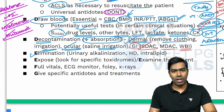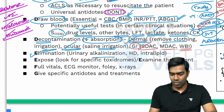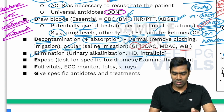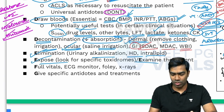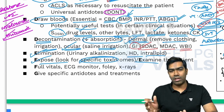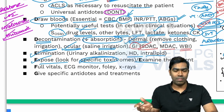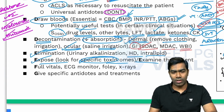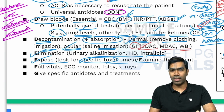E stands for two things. First, enhancing elimination, which can be done by one of three principles: urinary alkalinization, hemodialysis, or IV intralipid administration. Second, E also stands for exposing and examining the patient, because you need to look for specific toxidromes — a syndromic appearance of a particular toxin — so that once you identify it, you can give the specific antidote.